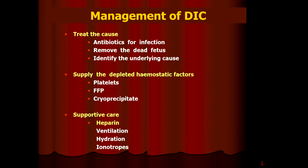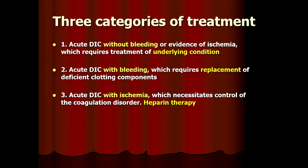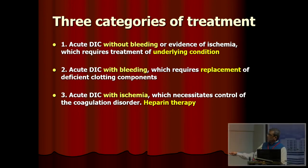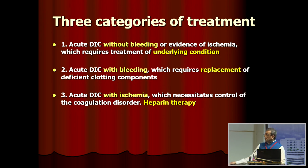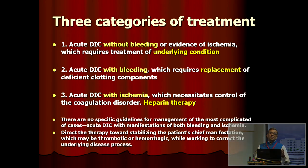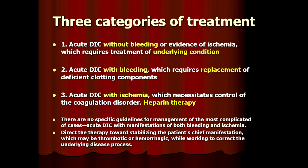In management — treat the underlying cause, supply the hemostatic factors which are depleted if the patient is bleeding, then give other supportive care. Most of the time we are in a phase where the patient has come to us depleted — we haven't picked them up early enough or been aggressive enough. We have three categories: DIC patients without bleeding, those with bleeding, and those with ischemia coming as thrombosis needing heparin therapy. More often than not we miss the prothrombotic phase, which then goes into acute DIC of the bleeding type once coagulation factors get utilized.